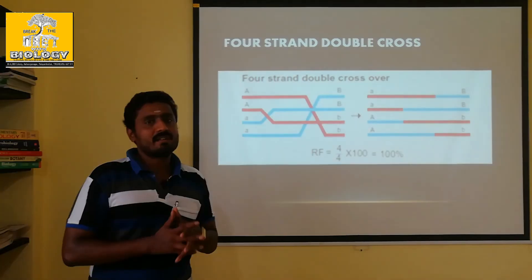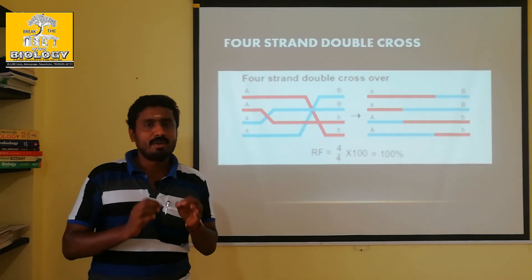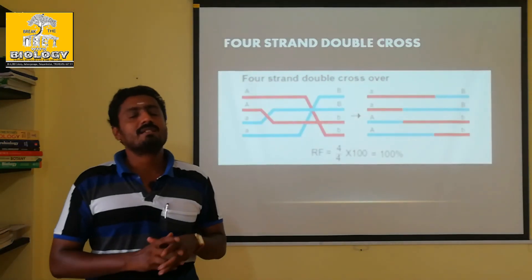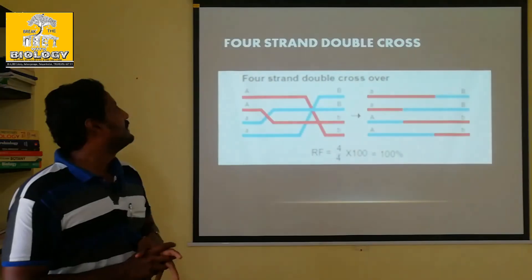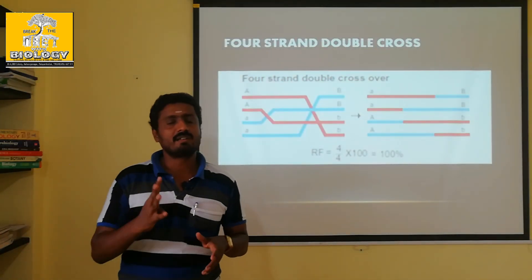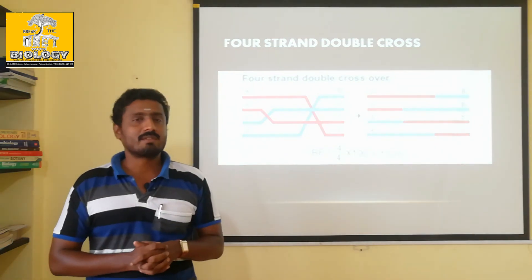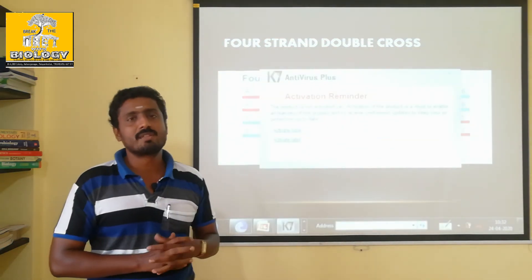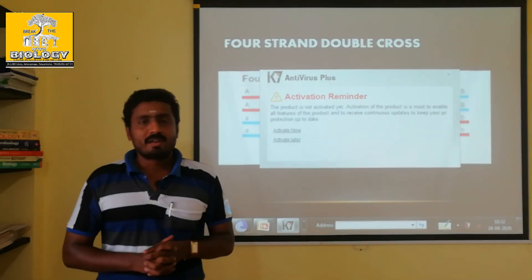In the basis of the formation of the chiasmata, how many chiasmata are formed in a crossing over decides the type of the crossing over. That means the type of the crossing over determines the recombination. Let me know how many types of chiasmata there are.